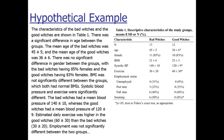Then the author just goes through reading line by line: 'There was a significant difference in age between the groups. The mean age of the bad witches was 45, and the mean age of the good witches was 36. There was no significant difference in gender, with bad witches having 85% females and good witches 83% females. BMI was not significantly different. Systolic blood pressure and exercise were significantly different. The bad witches had a mean blood pressure of 140, whereas the good witches had 120.' You can see the author is literally just reading the table. Give your reader more credit — they can get those details; you need to provide a higher level summary.